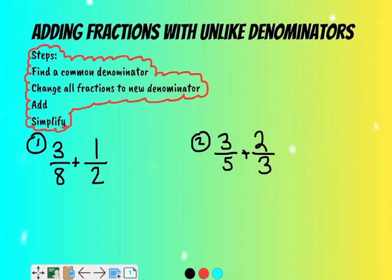Adding fractions with unlike denominators, there's a few steps you have to take. The first step is you have to find a common denominator. Second step is you need to change all the fractions to whatever new denominator works with both of them, add them together, and simplify them at the end.